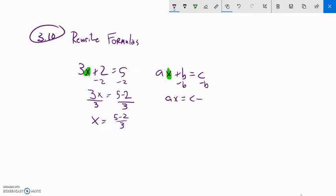So I'd end up with ax equals c minus b, just like I ended up with 3x equals 5 minus 2 over here. And then since this is a times x, I could divide both sides by a. And I would have something like x equals c minus b over a.